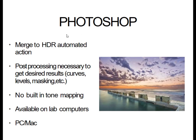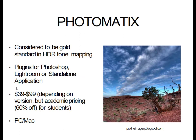Photoshop has a process where it automatically merges these HDR photographs together for you. The process is actually quite simple, but what some other software doesn't have is the ability to do additional post-processing. Typically when just creating the HDR image, it might create a really nice image but it's still not done — it still requires using techniques we've already learned in class, like applying different adjustment layers, levels and curves, to continue enhancing the HDR image. Photoshop merge to HDR is an automated action, and there is no built-in tone mapping. It's available in all the lab computers on PC and Mac.